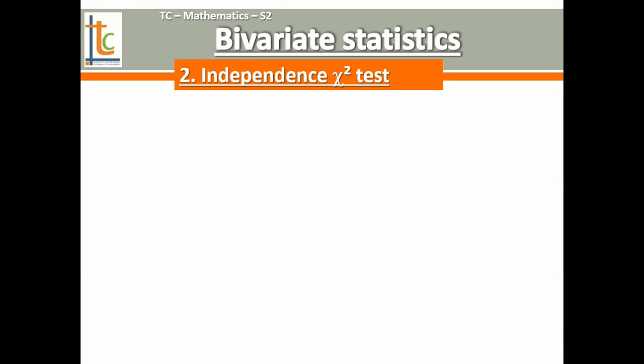Hello everyone and welcome to this video in which we will talk about the independence chi-square test. We are in the chapter bivariate statistics, which means that we are crossing two variables — two characters that have been studied inside a population. On each individual, two pieces of information are taken and then crossed in a table. The formatting of the chi-square test is made for contingency tables, that means crossed tables.